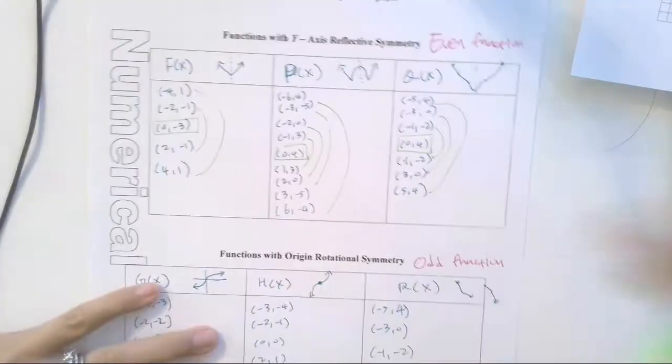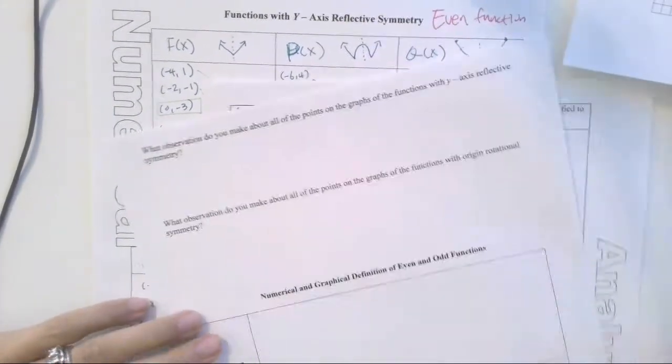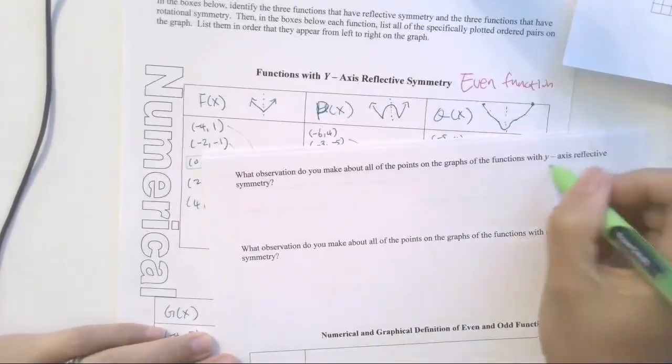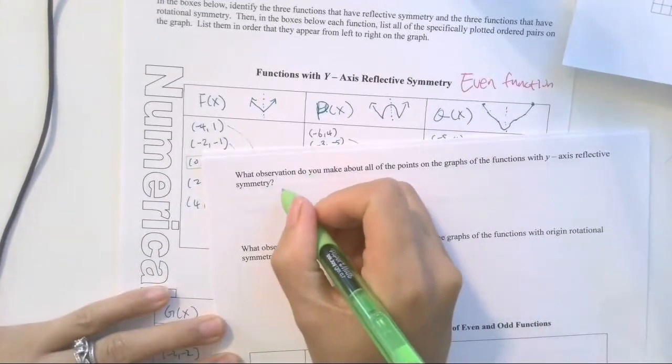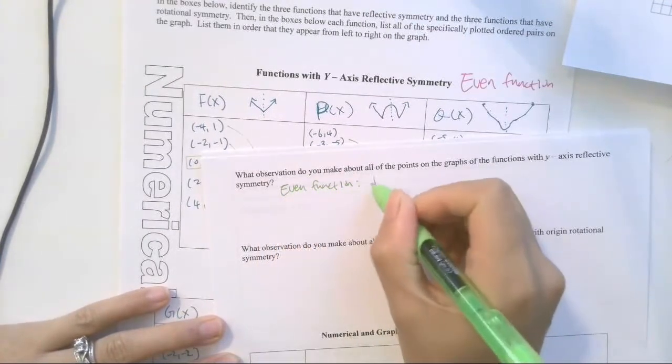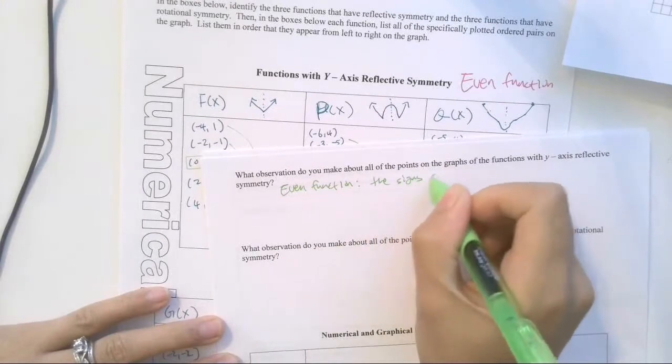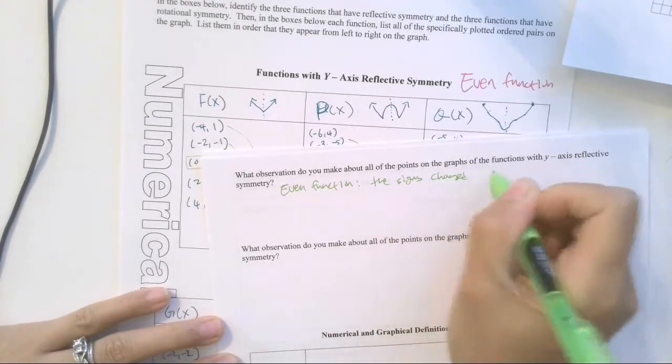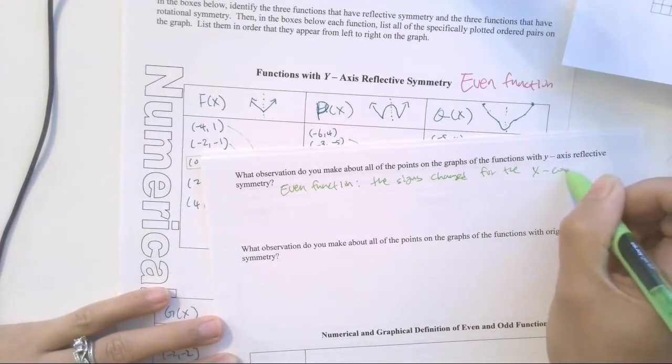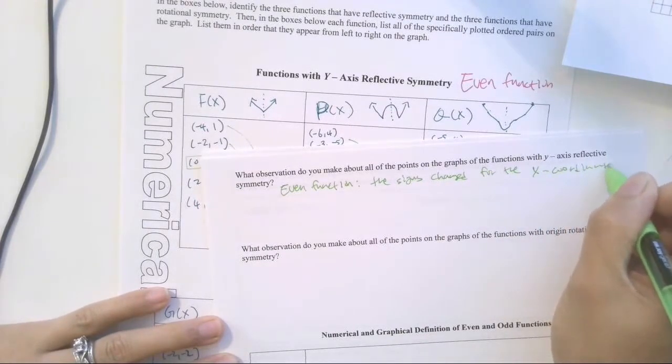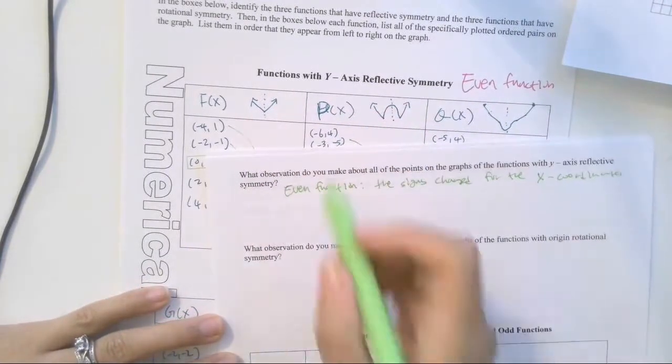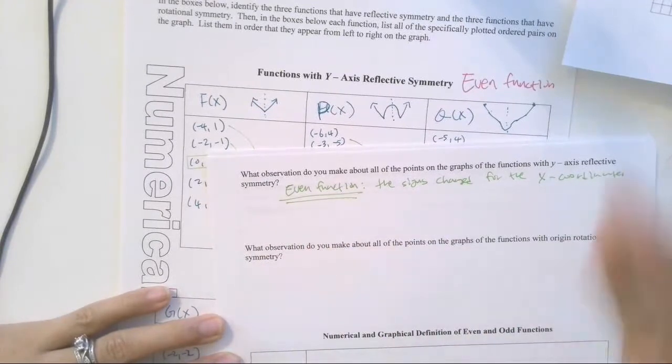So let's write that over here on the next page. What observation do you make about all the points in the graph of the y reflection symmetry? In other words, what do all the even functions have in common? The signs change for the x coordinate. So y stays the same, x changes the sign. That's how you know whether it's an even function just by looking at the points on the table.